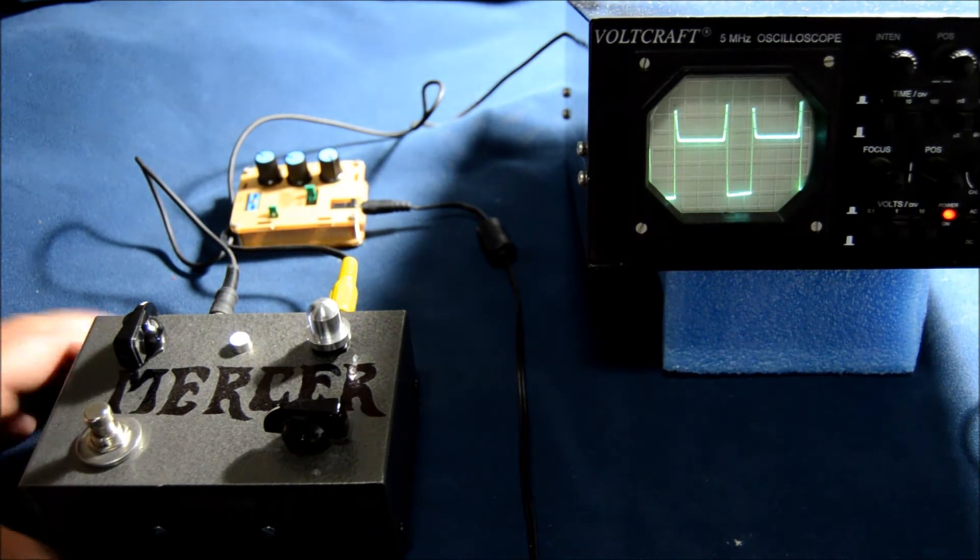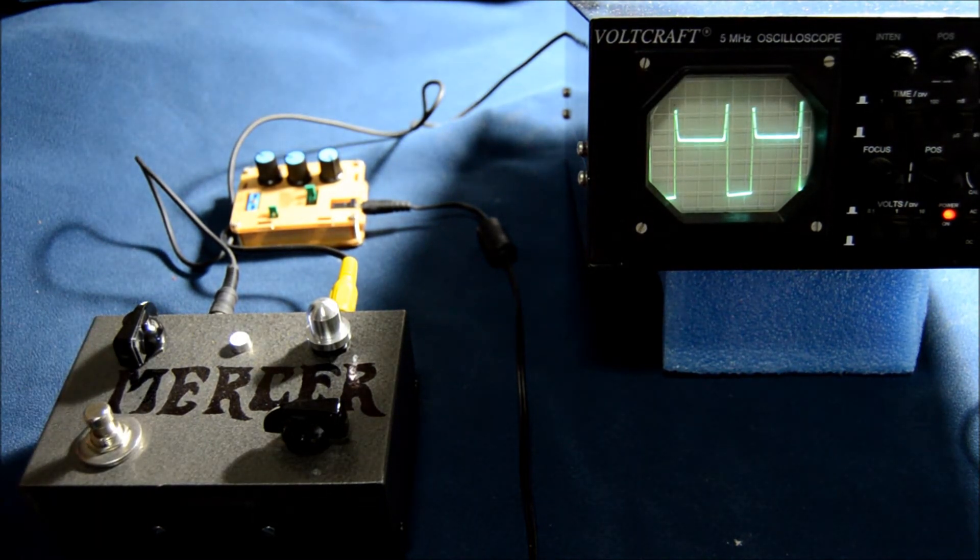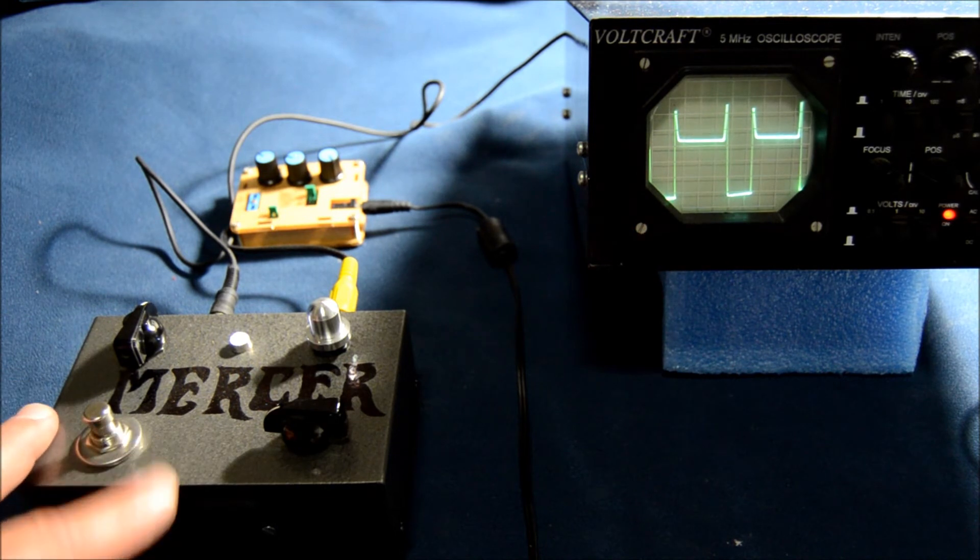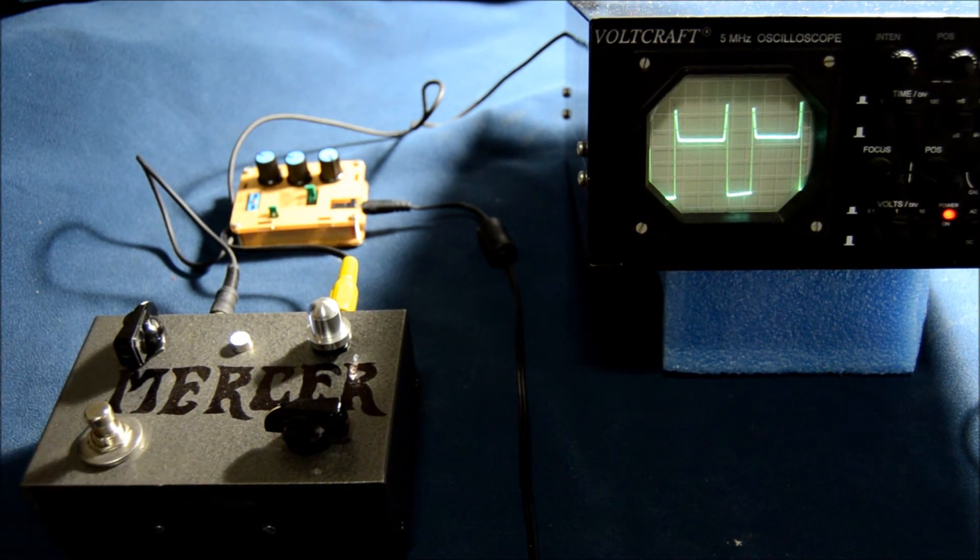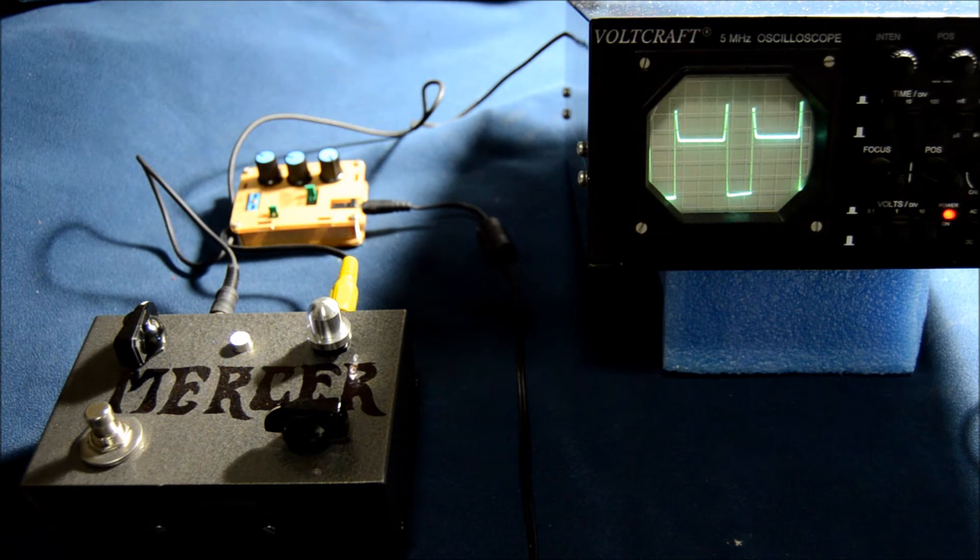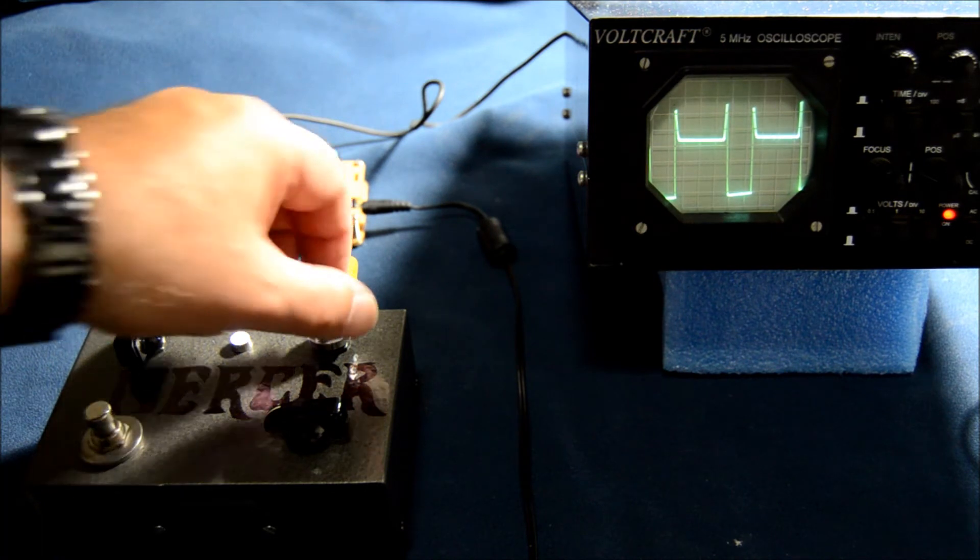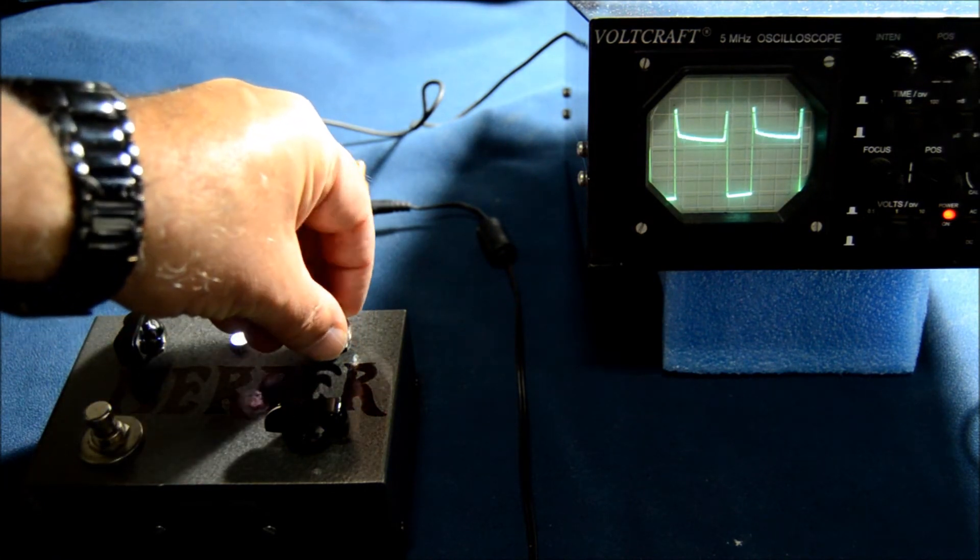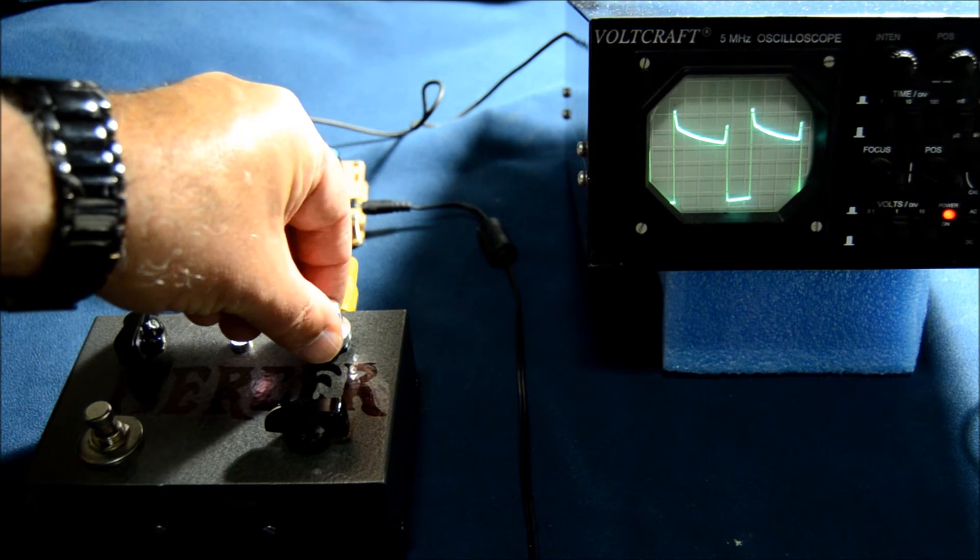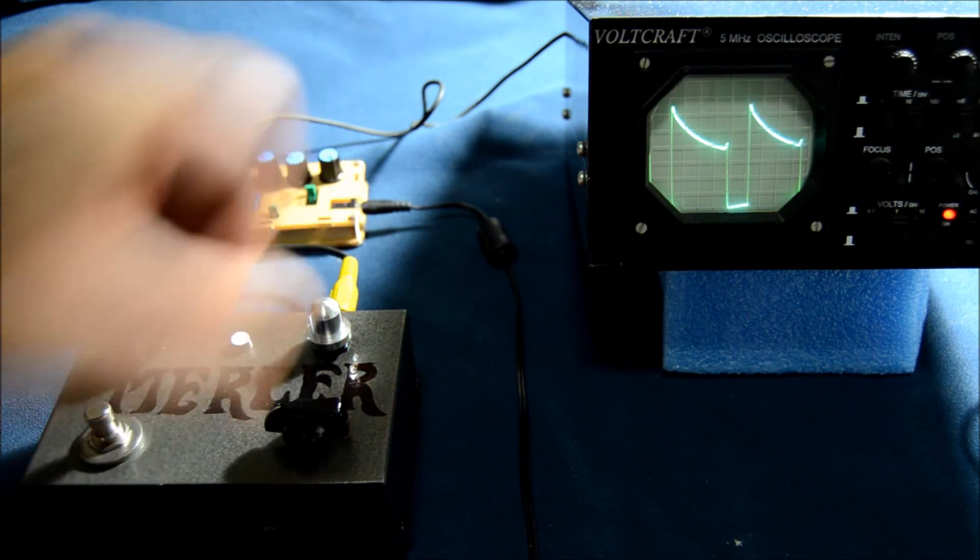Now it's my own pedal, the Mercer Box, which is a fuzz pedal based on germanium transistors. It's set to the least fuzz possible, and we see that the waveform is quite different. There's two peaks on the squares. If we turn up the fuzz, we see that it gradually takes this form.